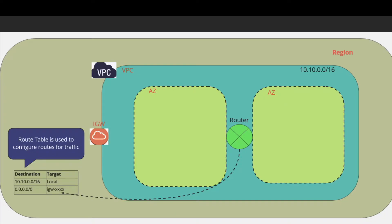Every router has a route table that is used to configure routes for traffic. As you see in this route table, internet traffic represented by 0.0.0.0 passes through the internet gateway, whereas the VPC subnet 10.10.0.0 passes through the local router. This makes it possible for all the resources within the VPC to talk to each other.